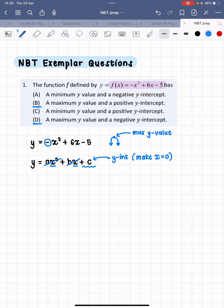Now this equation has a c value of negative 5, meaning that it has a negative y intercept. So for this question, the correct answer is going to be option d. This function has a maximum y value and a negative y intercept.